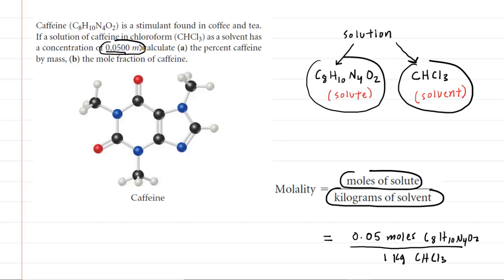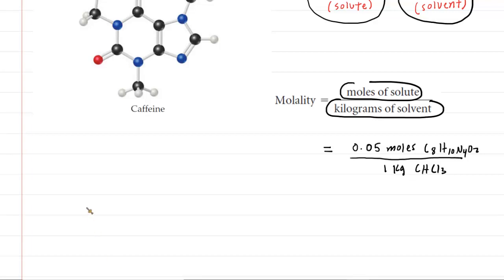So you can interpret that molality in that manner by saying there are 0.05 moles of caffeine and 1 kilogram of the chloroform. Now, how does this help us? Well, we do need to calculate the percent of caffeine by mass. So let's take a look at that expression next.